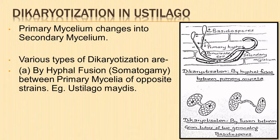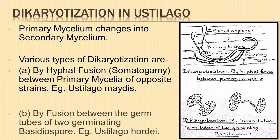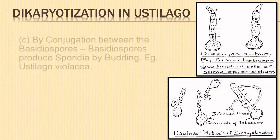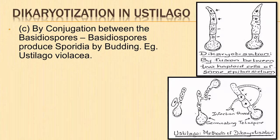Dikaryotization can also take place by fusion between the germ tubes of two germinating basidiospores. As the basidiospores germinate, the germ tubes of basidiospores of opposite strains meet and fuse, giving rise to the secondary mycelium, as seen in Eustilago hordei.